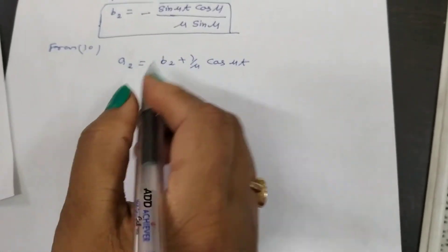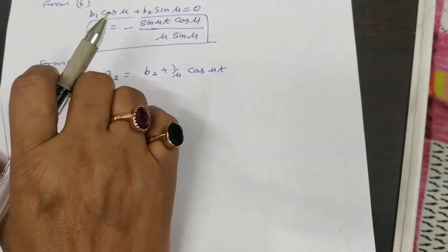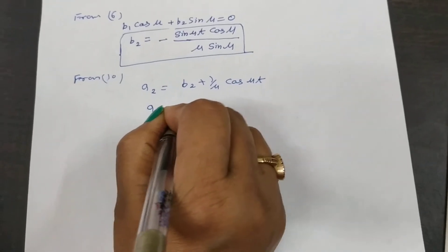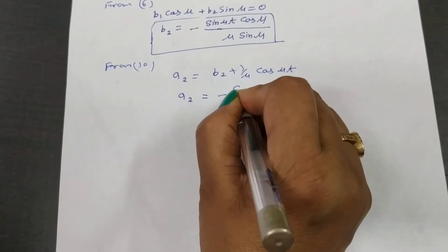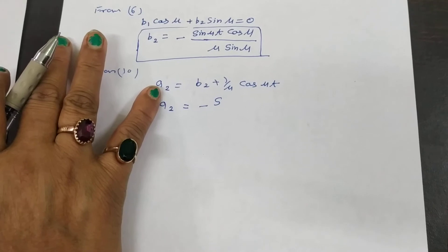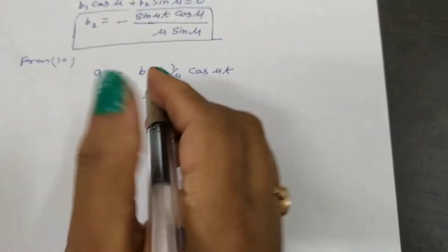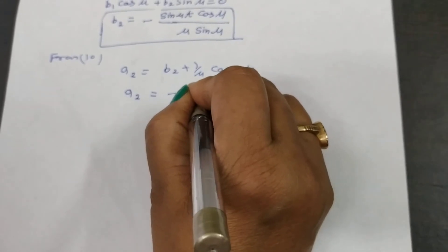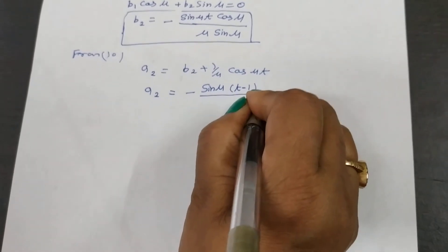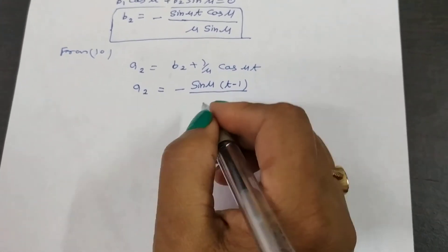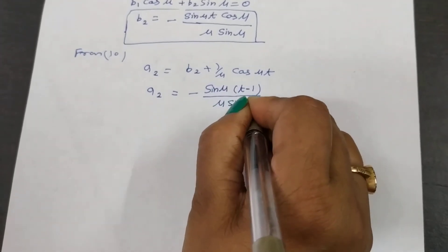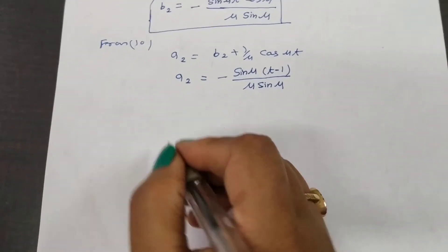Substituting the value of b2, you get a2 equal to minus of sin(μt minus 1). Using the formula sin A cos B minus cos A sin B, that is μ sine. Now substituting all the values of a1 and a2.